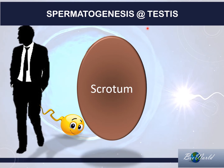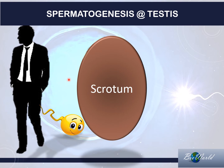Spermatogenesis occurs in the testis of a male. The testis is protected in a layer of skin called the scrotum, which is located outside the body of the human male. It is positioned outside the body because spermatogenesis requires a temperature that is slightly lower than the human body temperature.